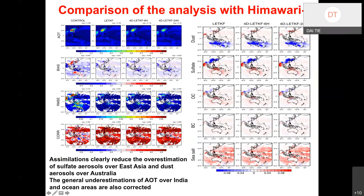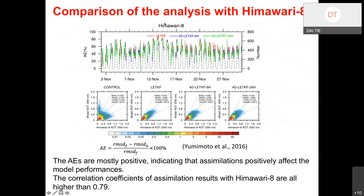We investigated why the model without assimilation overestimates AOT over East Asia. We find that sulfate aerosol is overestimated because the emission inventory we used is from about 10 years ago, when SO2 emissions in East Asia were higher. This causes the model to overestimate AOT. We define an assimilation efficiency metric, and find the general assimilation efficiency is about 50%.